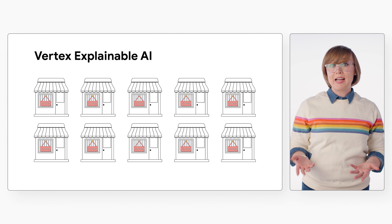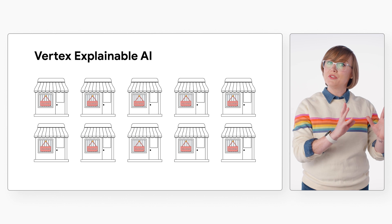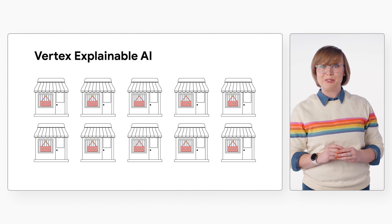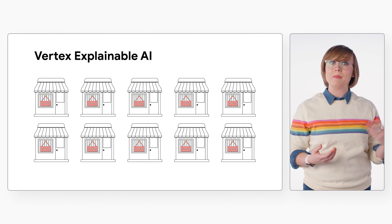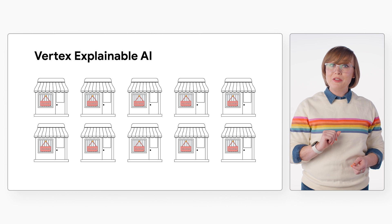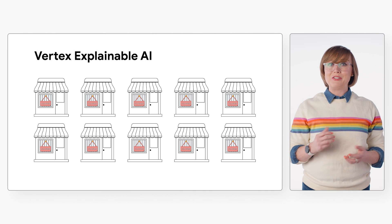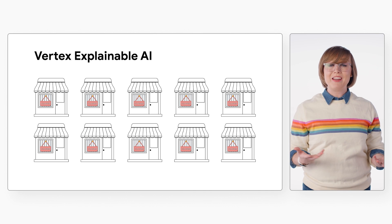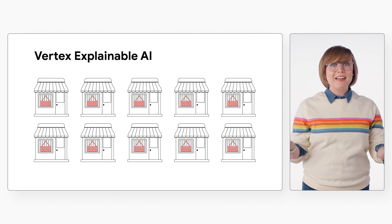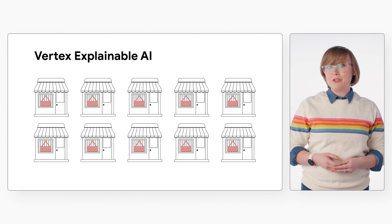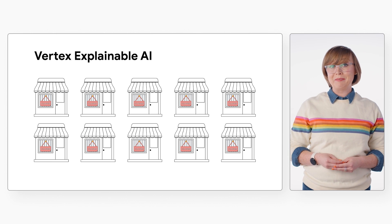Since Vertex AI is able to tell us how much each feature contributed to the predicted result with feature attribution, as well as find similar examples from example-based explanations, we can then use this information to verify that the model is behaving as expected, recognize bias in your models, and get ideas for how to improve your model and training data. Keep an eye out for future videos where we dive deeper into feature attribution and example-based explanations.